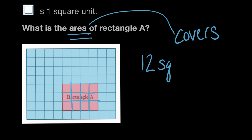Twelve square units. Rectangle A covers twelve square units, so it has an area of twelve square units. But this isn't the only way that we could have solved this. We could have also looked at this and said, okay, this top row is four square units long. One, two, three, four. It has a length of four units.